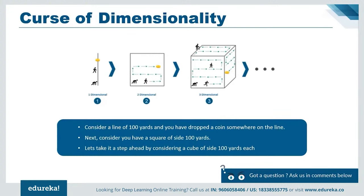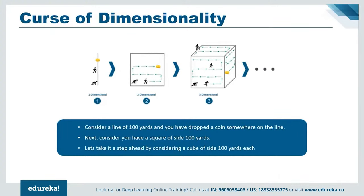Here comes deep learning to the rescue. Deep learning is capable of handling high-dimensional data and is also efficient in focusing on the right features on its own — which is the process of feature extraction. Before we understand exactly how deep learning works, let's have a look at the applications of deep learning.